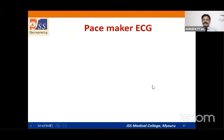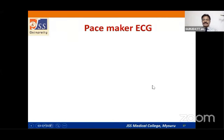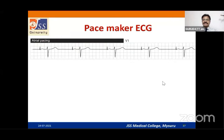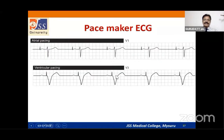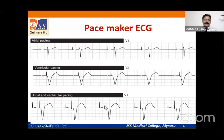Pacemaker ECG: look for pacemaker spikes. If the spike comes before the P wave, it is atrial pacing. If the spike comes just before a wide QRS complex, it is ventricular pacing. If there are spikes before both the P wave and the QRS complex, both atria and ventricles are being paced. There are many questions possible on pacemakers and anesthesia.